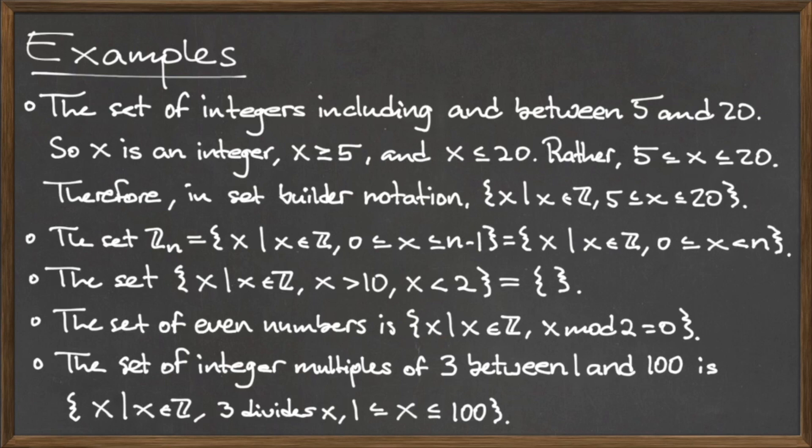Equivalently, we could say {x | x is in Z, and 0 ≤ x < n}. For the fourth example, recall that we can express the even integers in roster form as the numbers 0, 2, 4, 6, and so on, as well as -2, -4, -6, and so on.